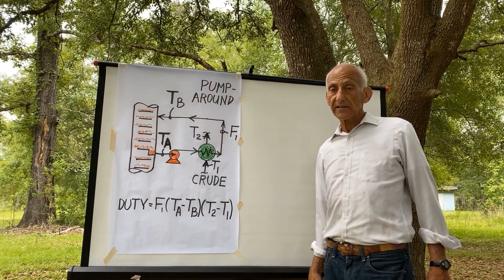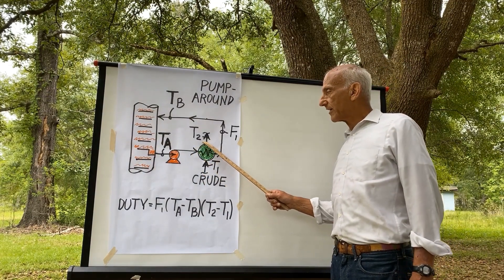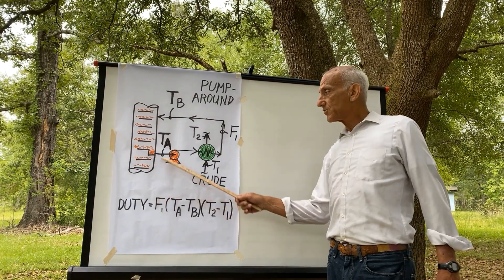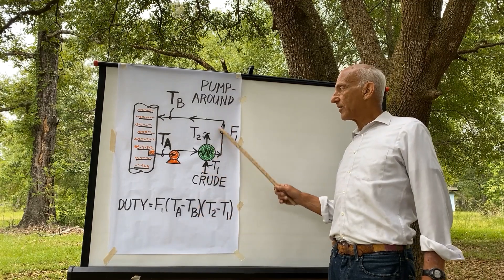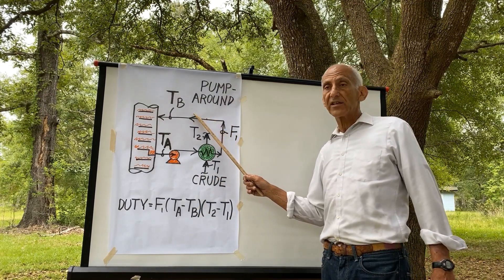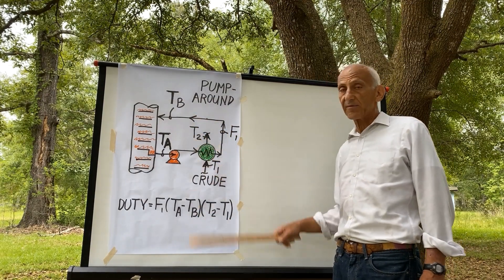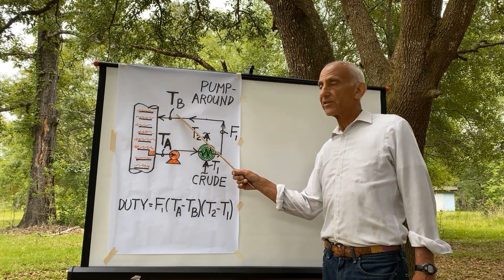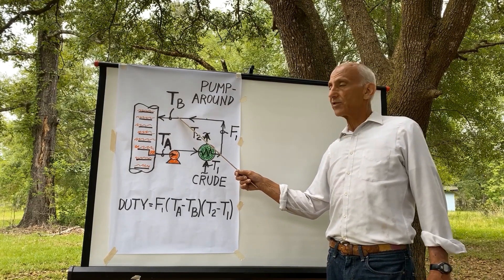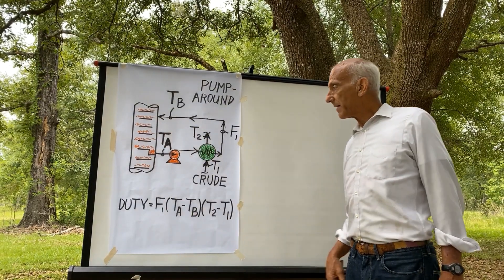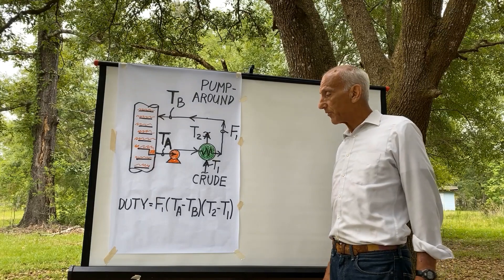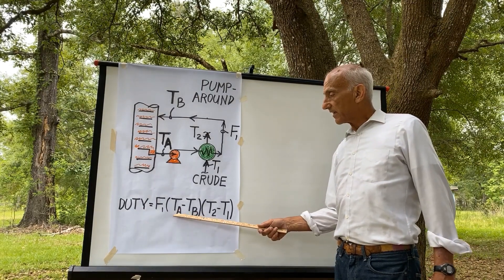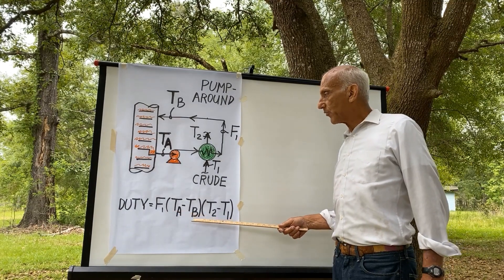Why? Because we are limited by the heat transfer capacity of this exchanger. As one increases the circulation rate, the heat transfer capacity of the exchanger remains the same because the surface area of the exchanger is constant. Then the pump around return temperature is going to go up. The amount of heat we remove for each barrel of pump around is proportional to the temperature difference between point A and point B.